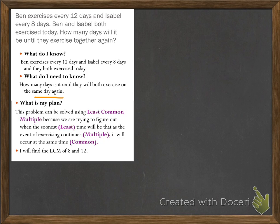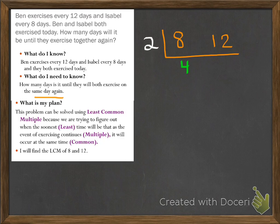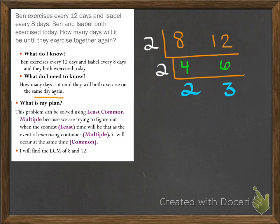I'm going to use the ladder method. I'll write 8 and 12 on the same line and draw my upside-down L. I'll take out the smallest prime number, which is 2. Two goes into 8 four times and into 12 six times. Then I do another L because we don't have all prime numbers yet, and take out another 2. Two goes into 4 two times and into 6 three times. Now we have all prime numbers: 2, 2, 2, and 3.